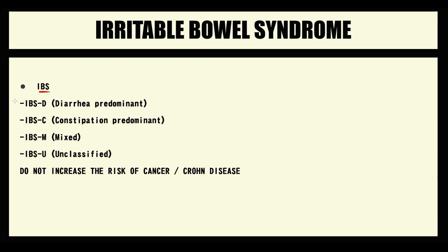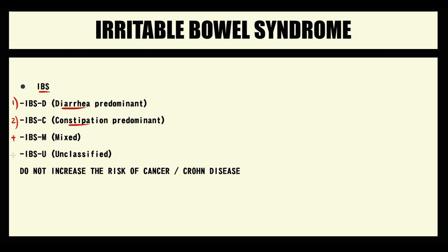The first subgroup is diarrhea-predominant — if the digestive system contracts quicker than normal, this results in diarrhea. The second type is constipation-predominant, occurring when the intestine contracts slowly. We also have a mixed type, where diarrhea alternates with constipation, and an unclassified type. Importantly, irritable bowel syndrome does not increase the risk of cancer or Crohn's disease, but it can greatly affect quality of life.